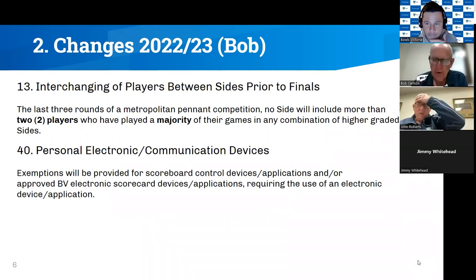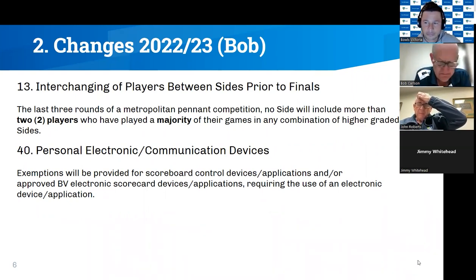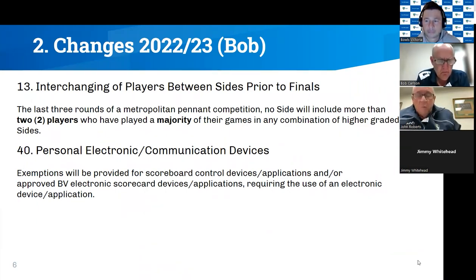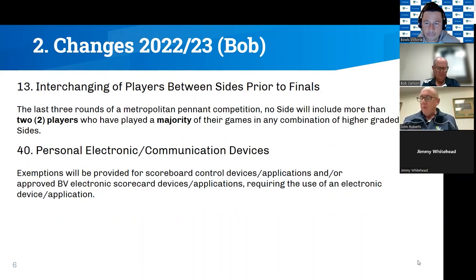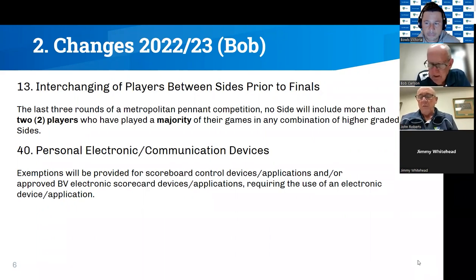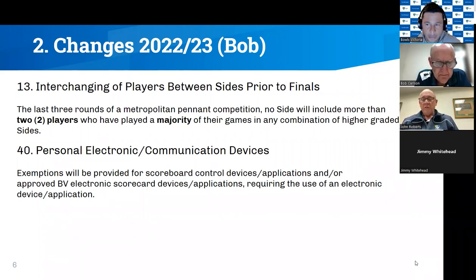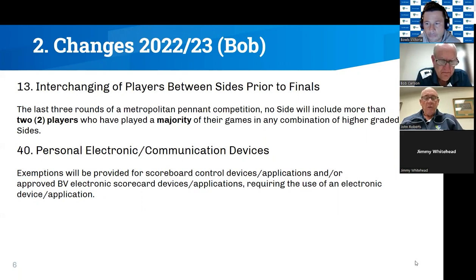When talking about electronic devices and exemptions: if a player is a member of emergency services — fire, ambulance, police — they can have their mobile phone on them, but they need to let the umpire know and keep the phone on silent or vibrate. Also, players who may have a possible emergency happening at home can use their phone, but they must tell the umpire why they have the phone on them, and it should be on silent or vibrate.